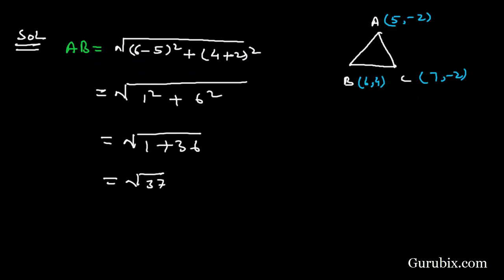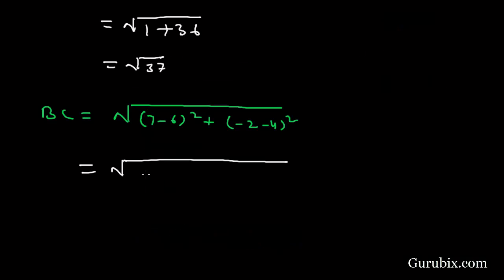And now we shall find the distance between B and C. In that, we shall subtract 6 from 7: (7 - 6)² + (-2 - 4)². This equals 1² + (-6)². This equals 1 + 36. And this equals square root of 37.